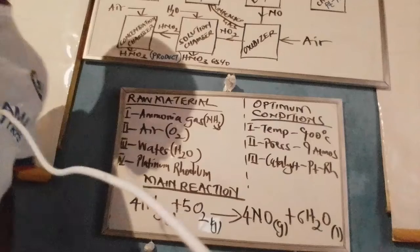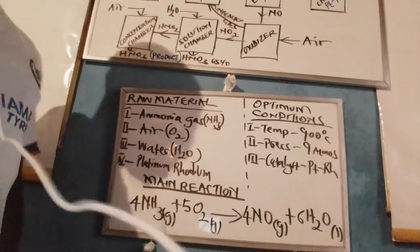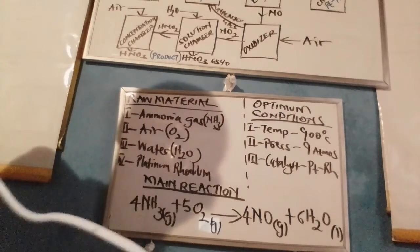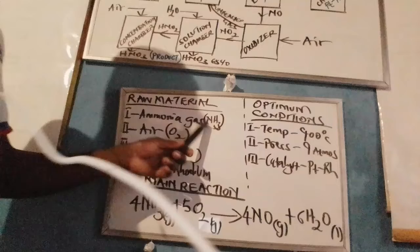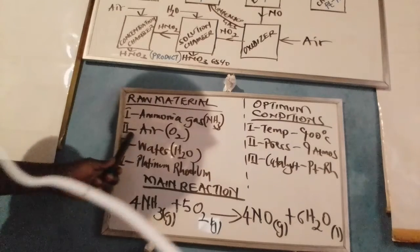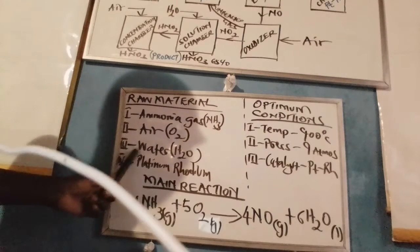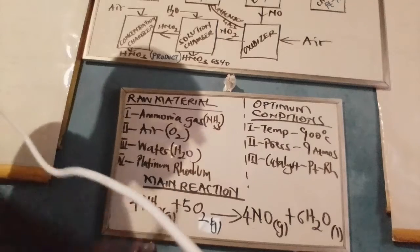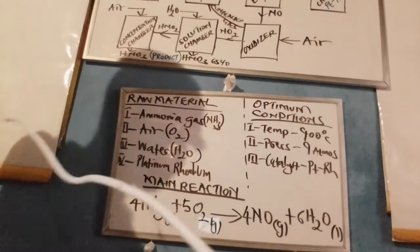In order to fabricate nitric acid, we need some core raw materials, namely ammonia gas, air, water which is a solvent, and platinum-rhodium which is the main catalyst.